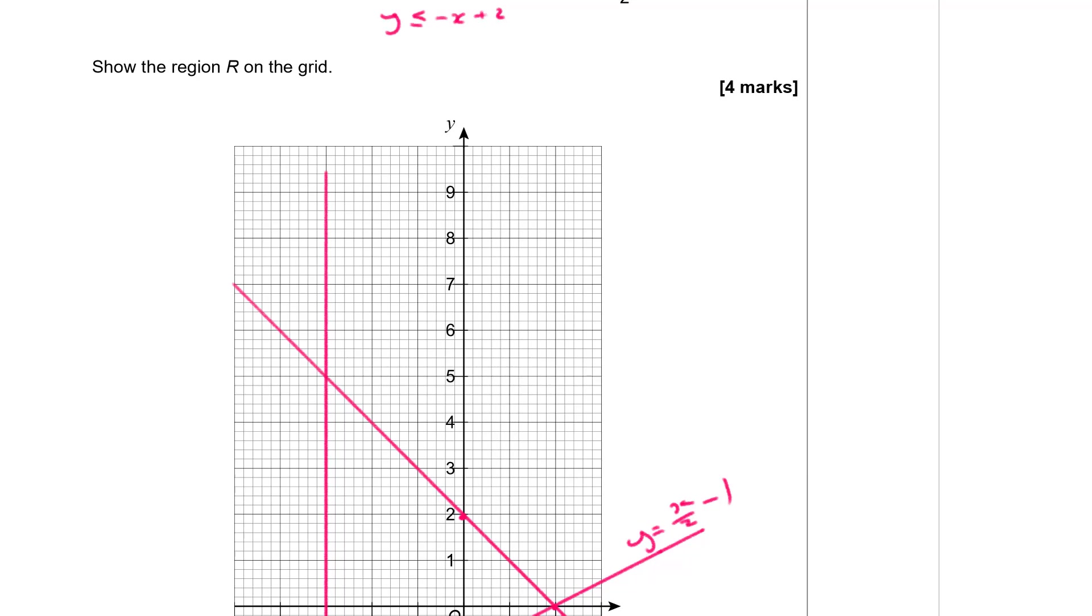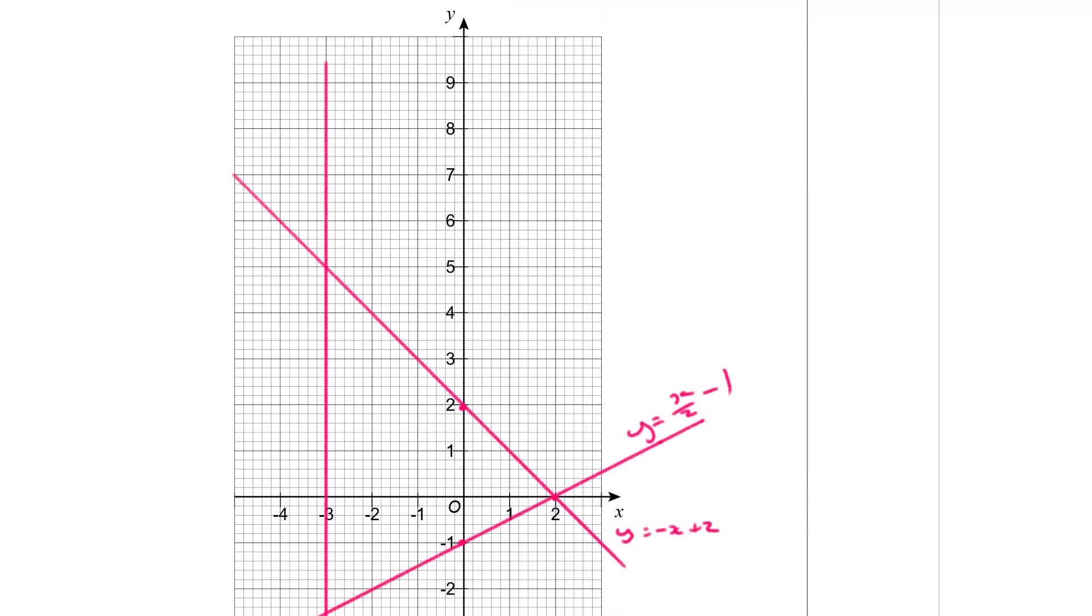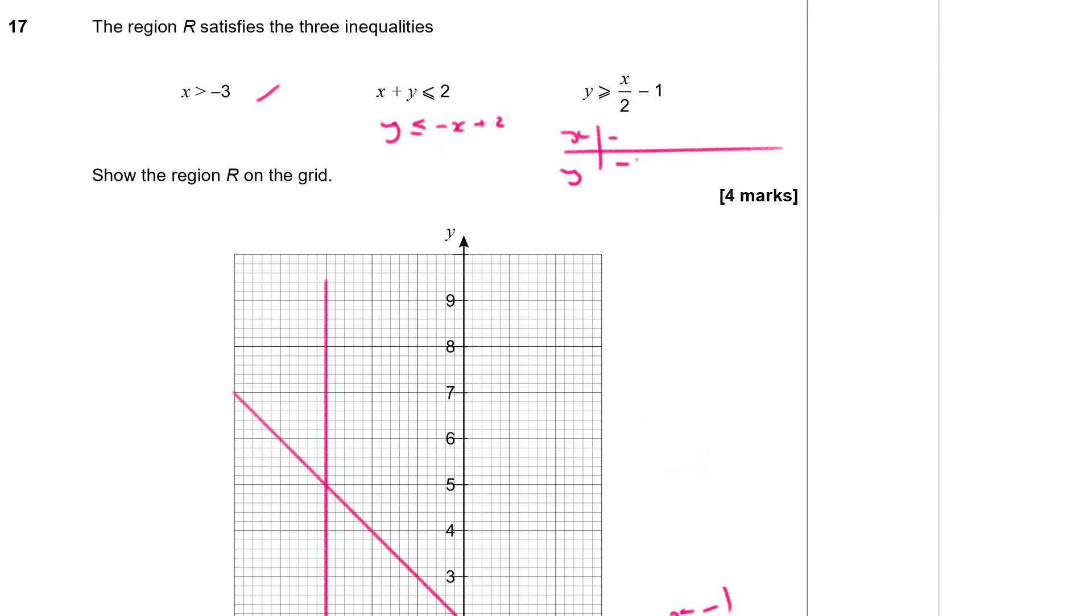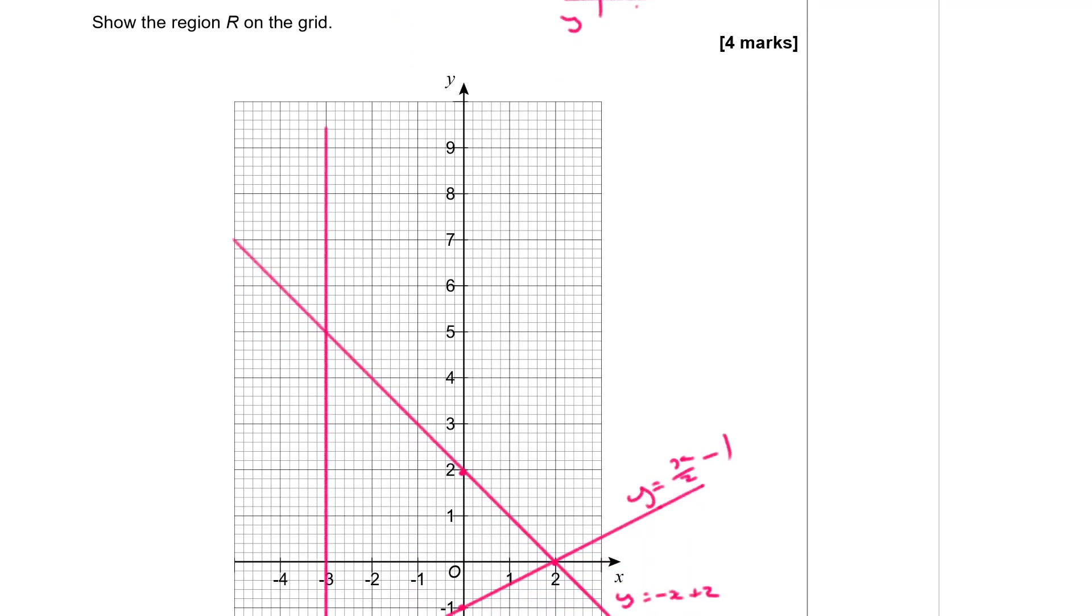Now if you're not so good at working with intercepts and gradients you could also do a table of values for these. So you could do x and y values and then pick values along your axes. So minus 4 minus 2 0 and 2 and sub those in and work out what the corresponding values of y are and plot them. That's another way of doing it. I'm just using the intercepts and the gradients to quickly draw my lines because I'm quite good at this sort of stuff.